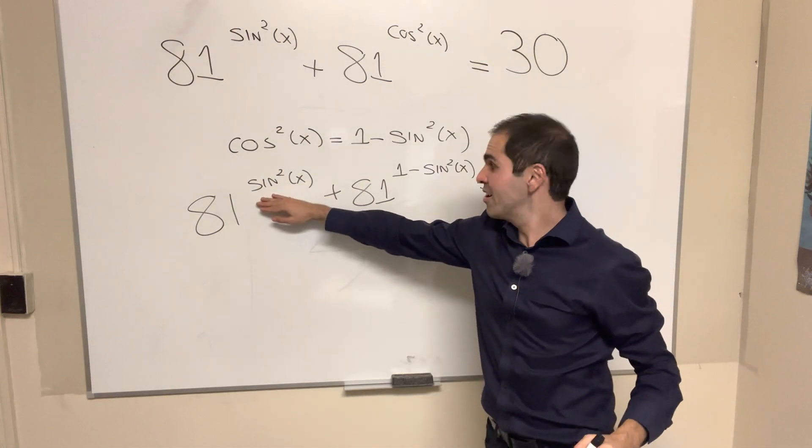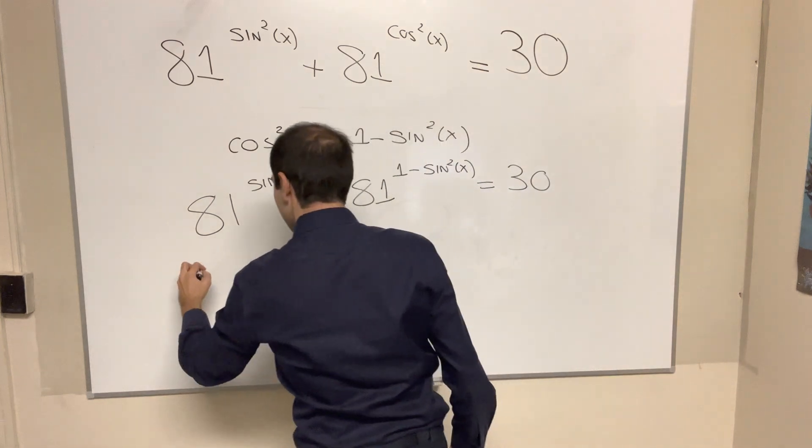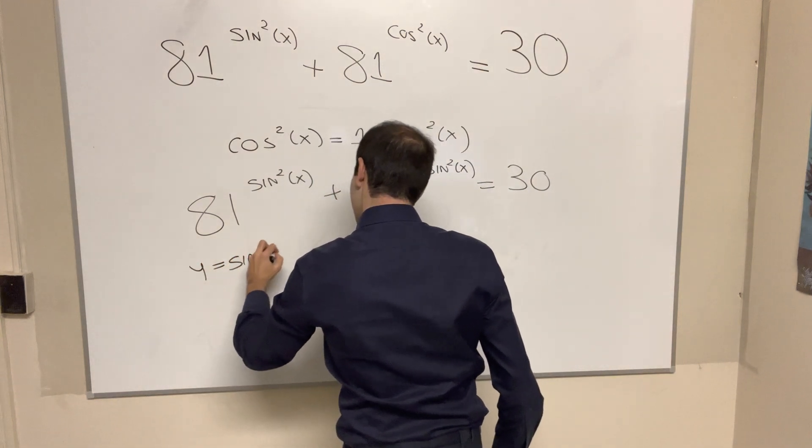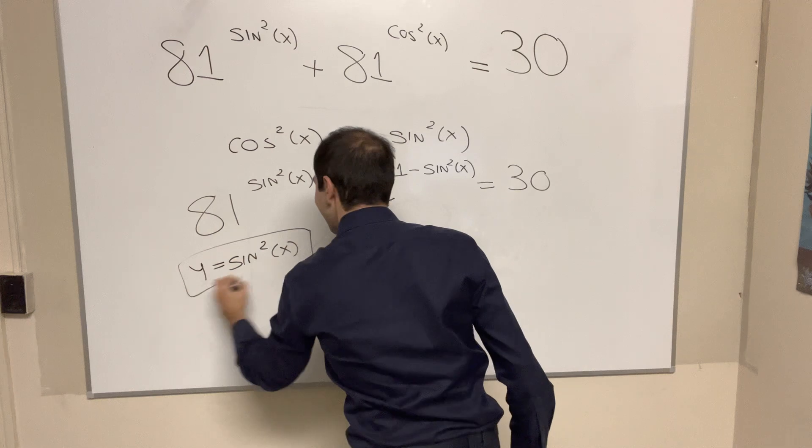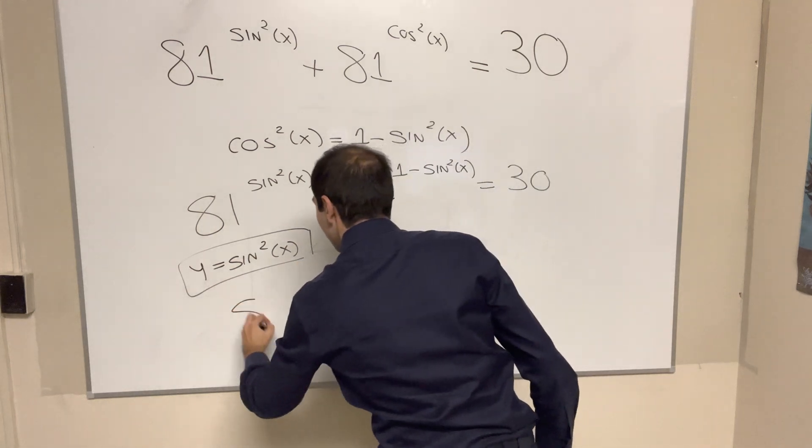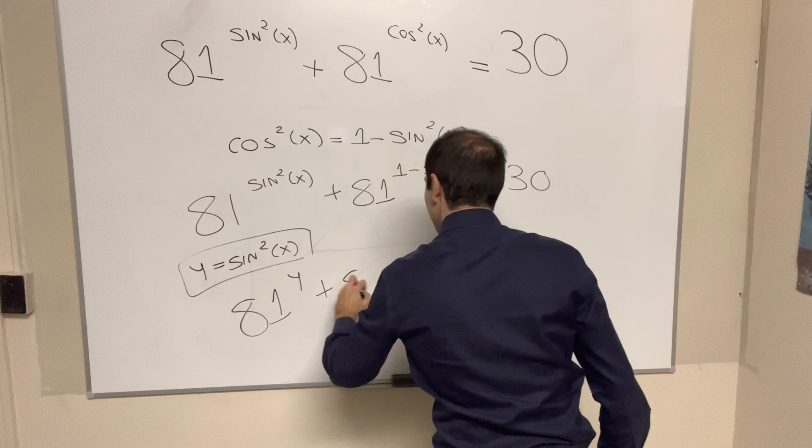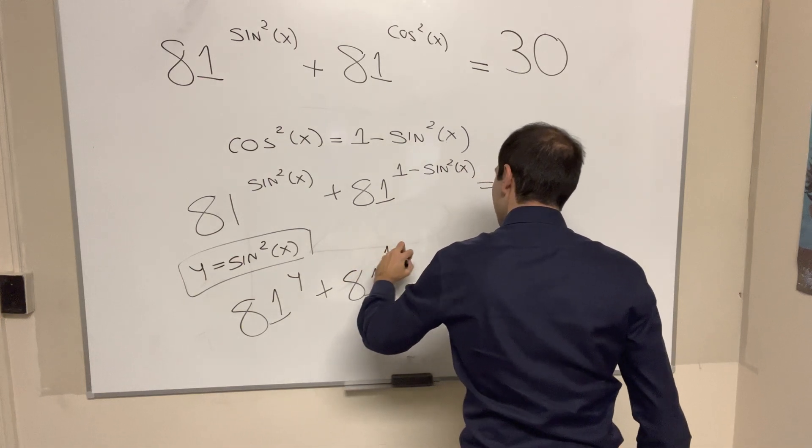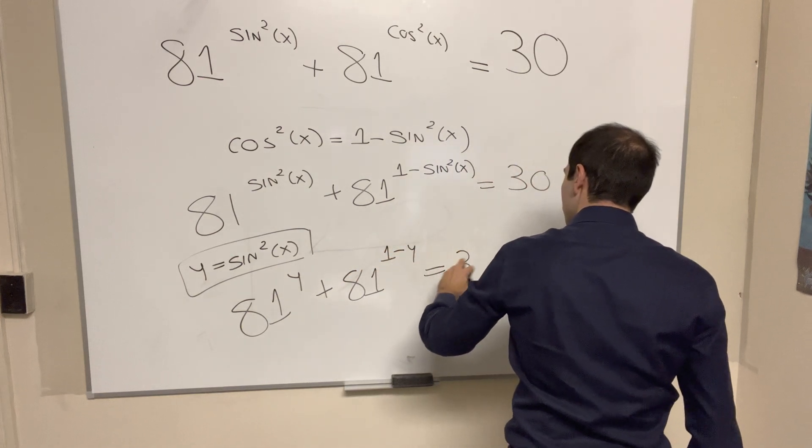So in particular, let y be sine squared x. Remember this for later. Then this problem just becomes 81 to the y plus 81 to the 1 minus y equals 30.